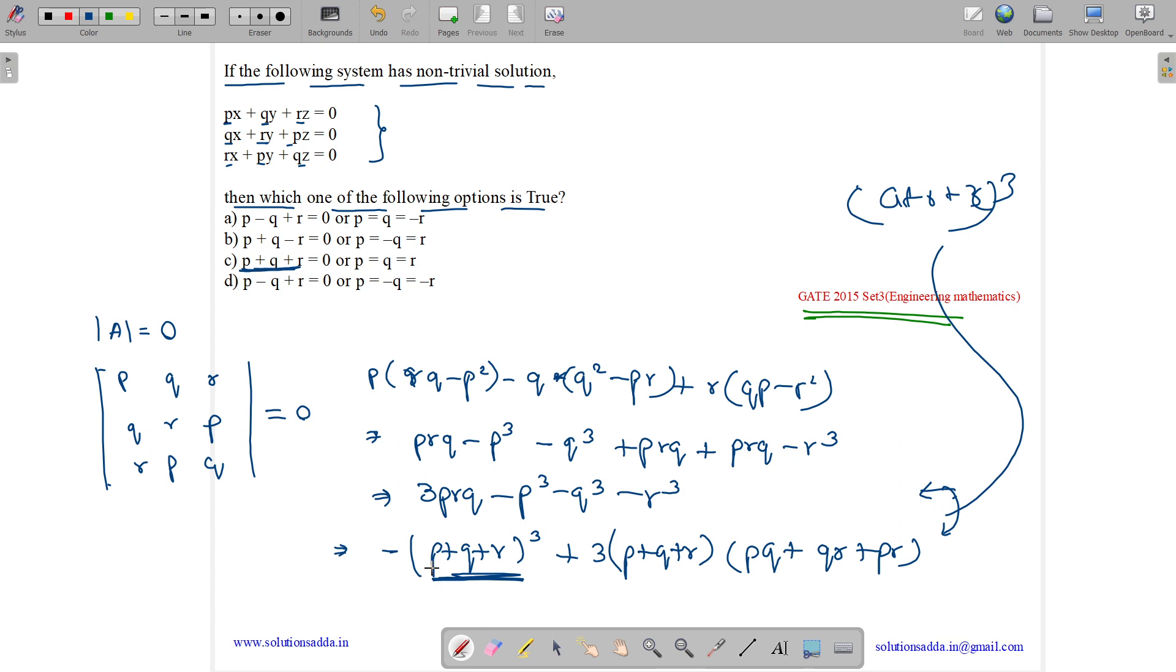If this becomes zero, then this becomes zero, so entire term becomes zero. Or either P equals to Q equals to R.